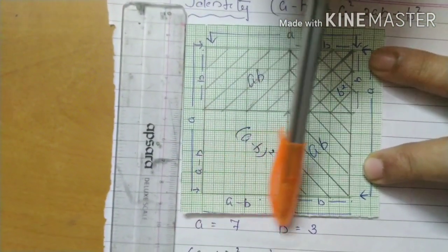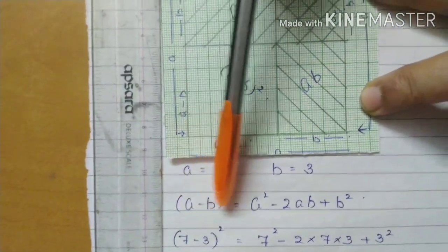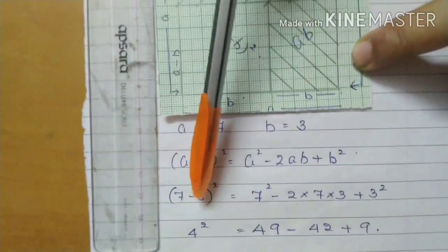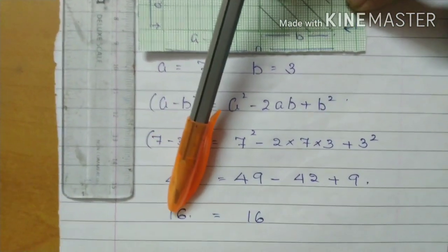Here I took A equals 7, B equals 3. When you are substituting, (A minus B) the whole square: (7 minus 3) the whole square, that is 4 square, that is 16.